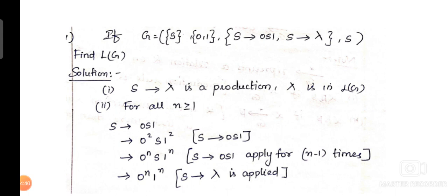Finally, when we substitute S tends to lambda — that is, when we substitute lambda for S — lambda gets cancelled. So we will get the format 0^n 1^n. This is the language for our given grammar.